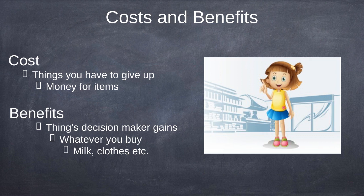So whenever you go to the store and you see a gallon of milk is $2.19, that's the cost — the money that you have to pay for it. You give up the money and that's the cost. What's the benefit? Things the decision maker gains. The benefit is you bought a gallon of milk, now you can drink it. That's the benefit — whatever you buy: milk, clothes, et cetera.